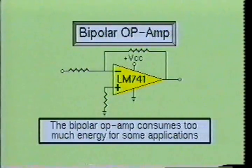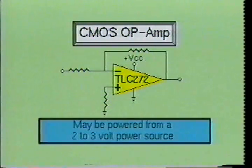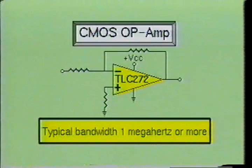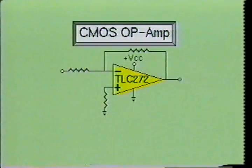The relatively high current consumed by the bipolar integrated circuit amplifier has long been a drawback to their use in battery-powered circuits. Thanks to CMOS technology, a new generation of micropower linear ICs have overcome this problem. Most CMOS linear ICs can be powered by a single polarity power supply with voltages ranging from two to three volts, and some devices can be powered by a one-volt power source. The CMOS operational amplifier has an extremely high input impedance, a unity gain bandwidth that exceeds one megahertz, and a very high gain factor. Even though the CMOS operational amplifier consumes very little power, some circuits designed with CMOS devices can consume nearly as much power as those designed with their bipolar counterparts.